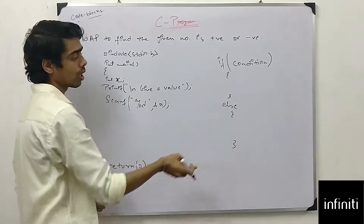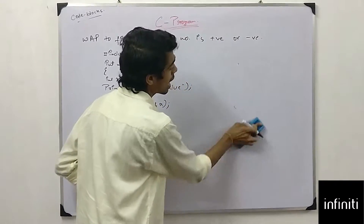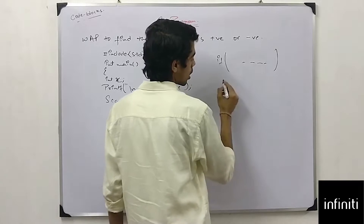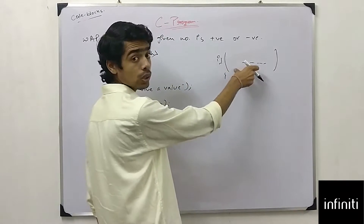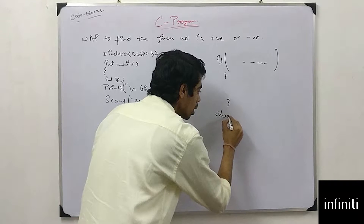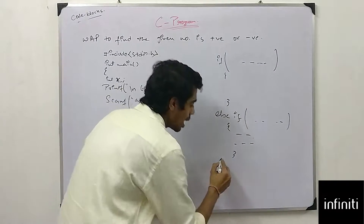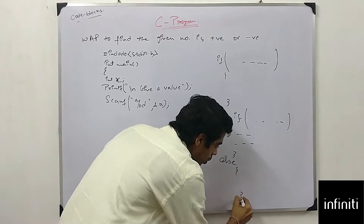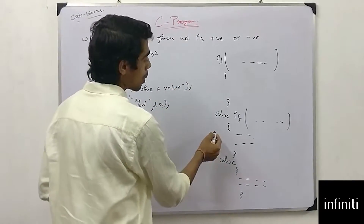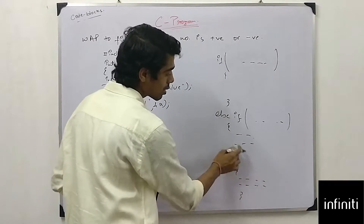The if-else condition can also be written as an if-else-if-else condition. This means: if some condition is satisfied, do some processing; else if some other condition is satisfied, do some other processing; else do the rest. You can give many else-if conditions in between.